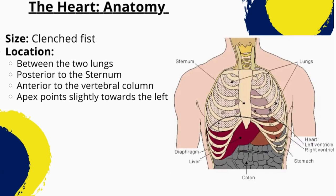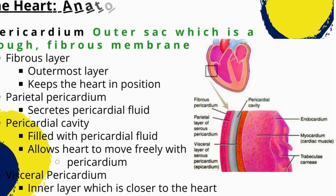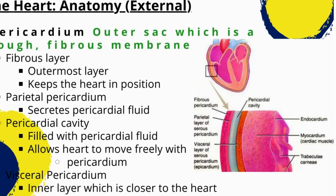Externally, the human heart is a roughly cone-shaped organ about the size of a clenched fist, located in the chest between the lungs, behind the sternum, and slightly to the left of the midline. It is surrounded by the pericardium, a sac that contains a small amount of fluid and helps to protect the heart. The fibrous pericardium is the outermost layer of the pericardium, composed of dense connective tissue, providing a strong and rigid structure that protects the heart from physical trauma and keeps it in place within the chest.